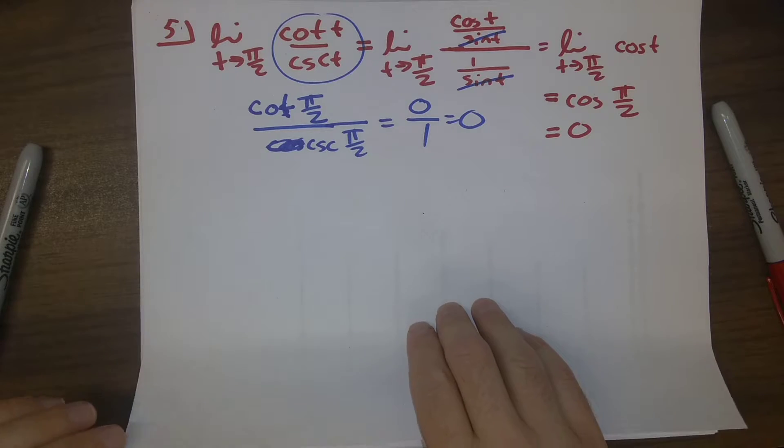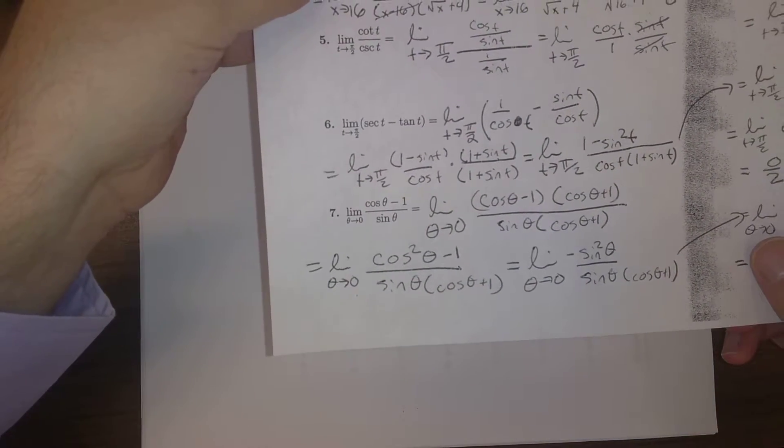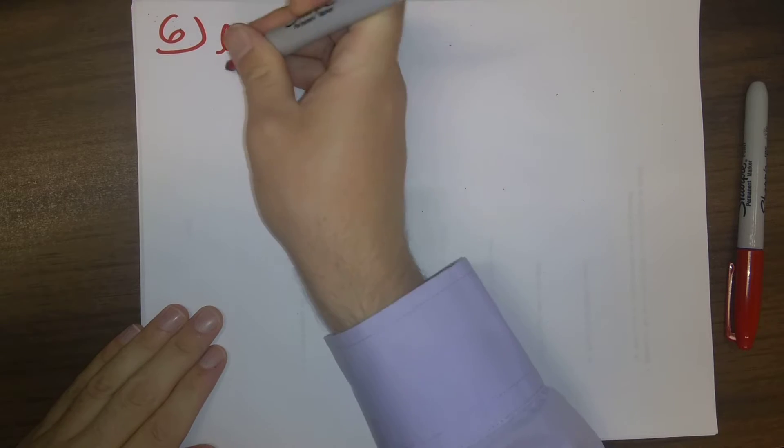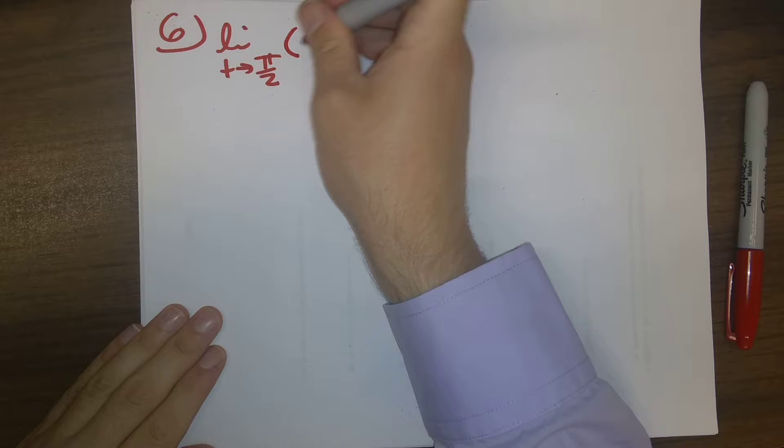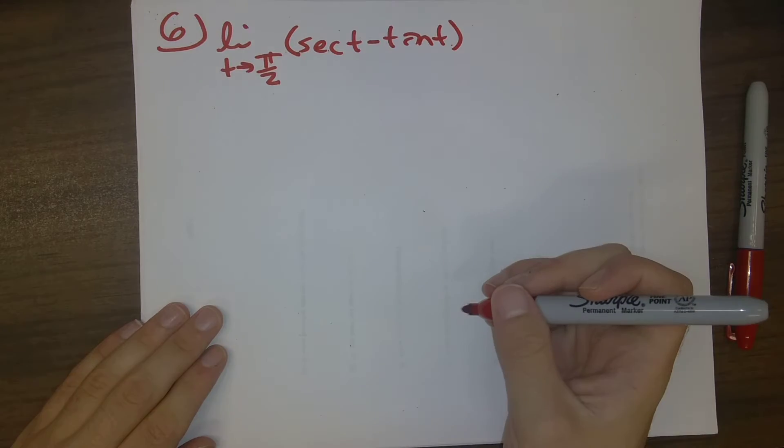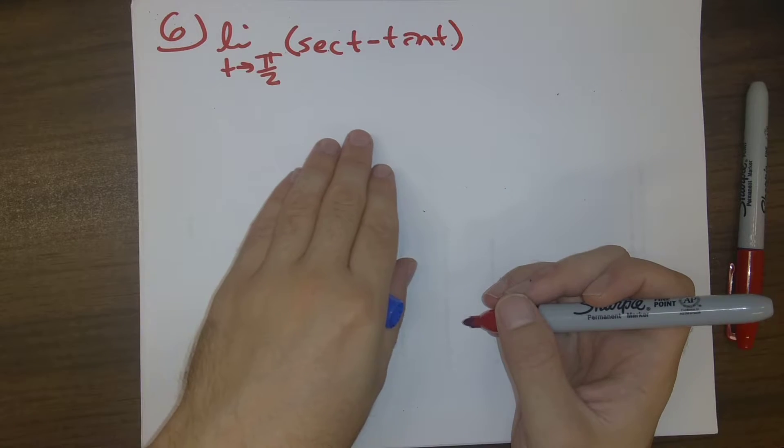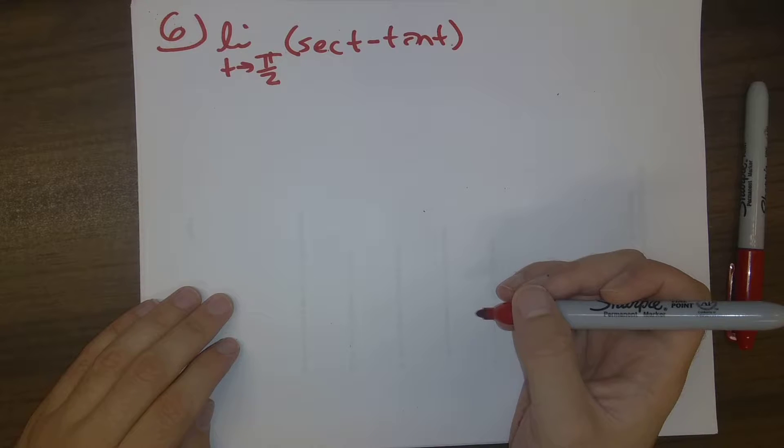Okay, so that's a warm-up. Let's look at the second problem. The second problem was the limit of secant minus tangent as t went to pi over two. The limit as t goes to pi over two of secant t minus tangent t. Now this is a case of infinity minus infinity indeterminate form.